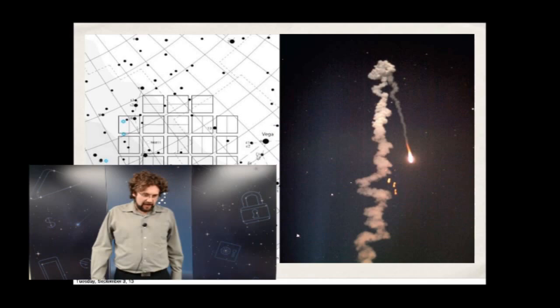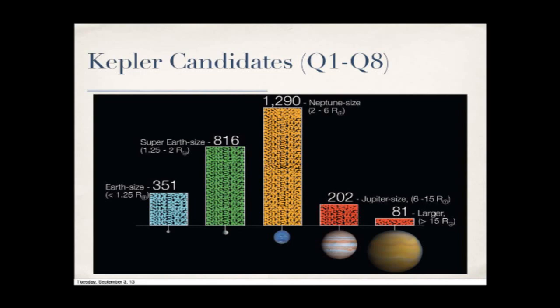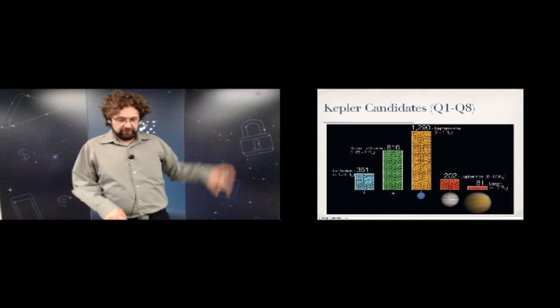The sample I'm using is the Kepler candidates from quarters one through eight — over 3,000 candidates. There are 350 Earth-sized ones, over 1,000 Neptune-sized objects between 2 and 6 Earth radii. I'm going to talk about one object in the Earth-sized bin — the cyan group — and a couple in the Jupiter-sized range of around 202 candidates, showing some interesting results.